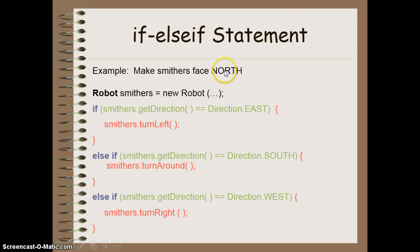So here's an example that will make Smithers the robot face north. If my direction is east, turn left. If my direction is south, turn around. If it's west, turn right. This particular clause has no else statement because the only other option would be it's already facing north, in which case I don't need to do anything. So I don't need to put the code in there for else if it's not going to do anything anyway.